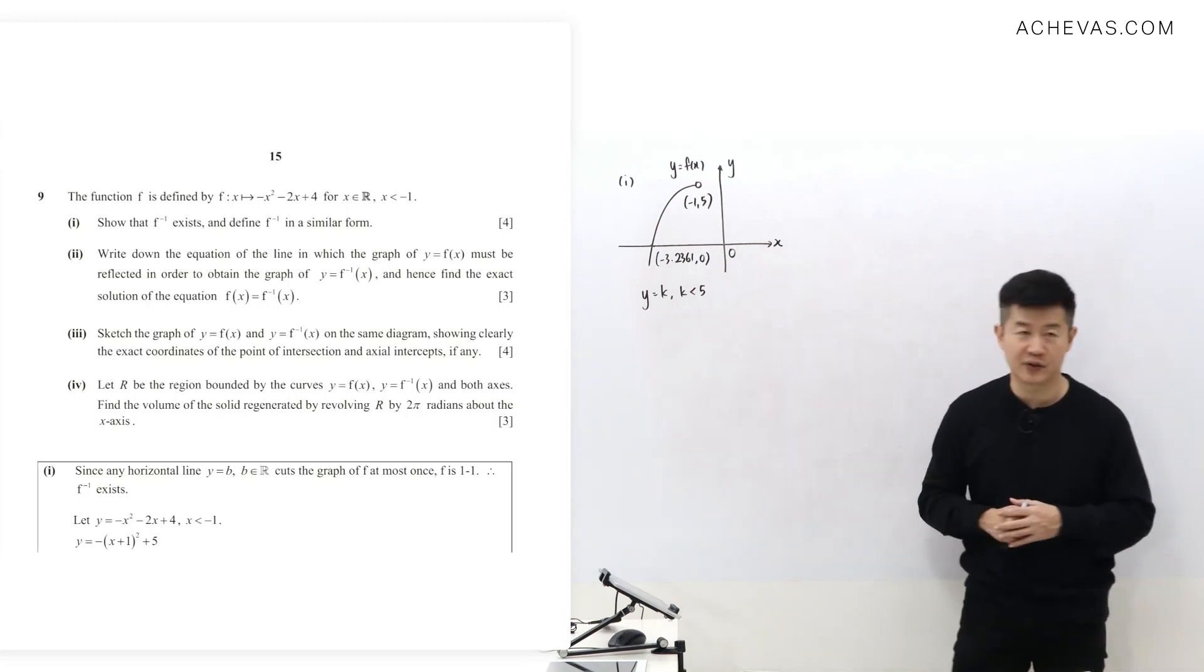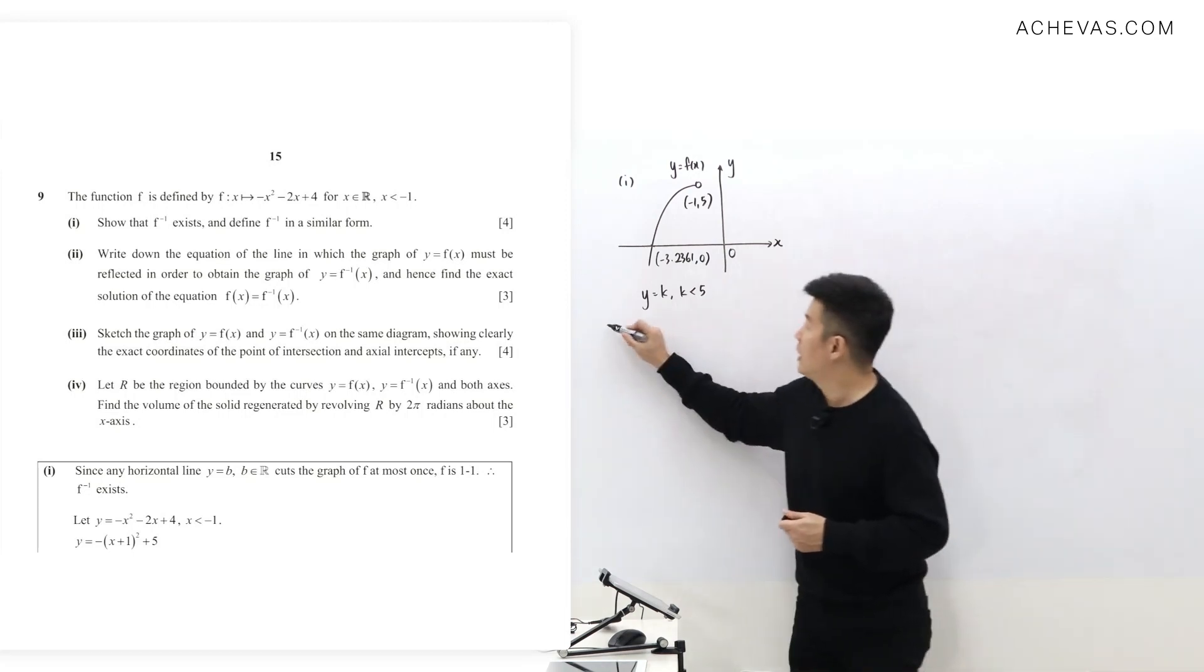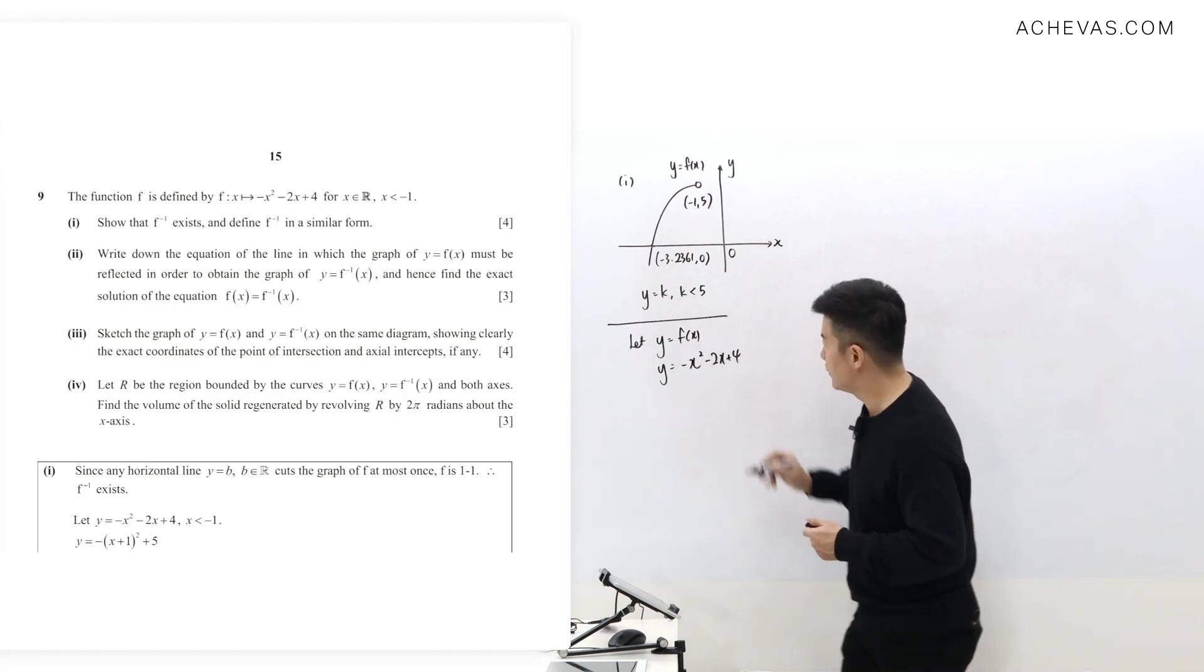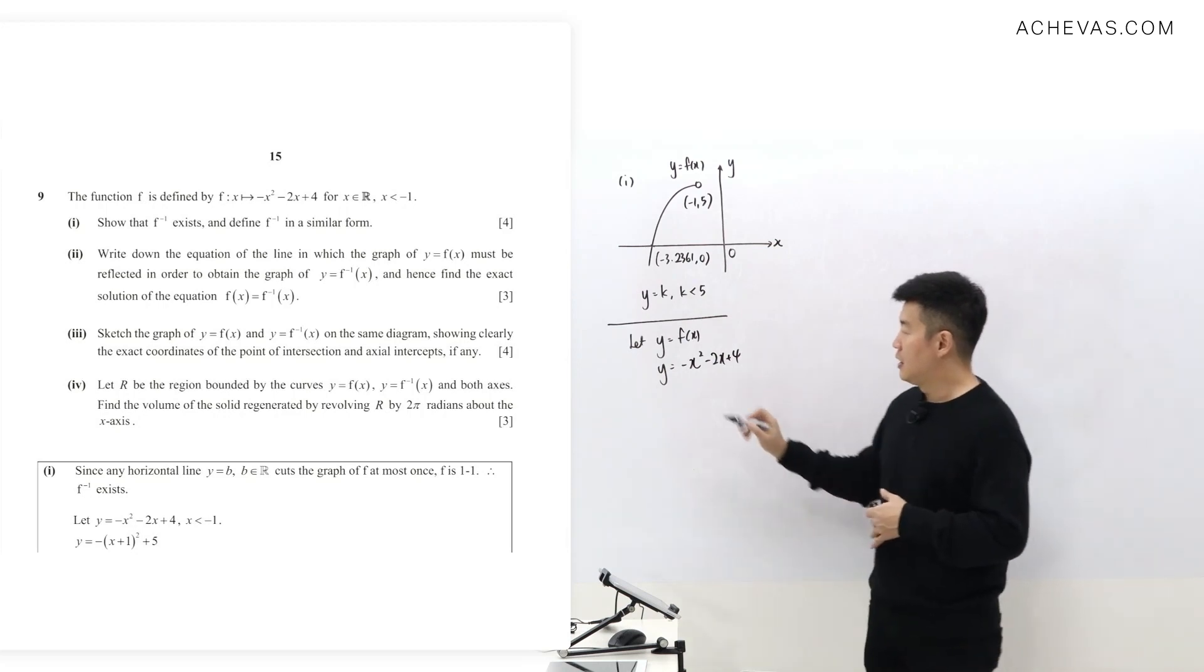Then we're going to let y be equal to f(x), which means that y equals negative x squared minus 2x plus 4. I'm going to make x the subject.